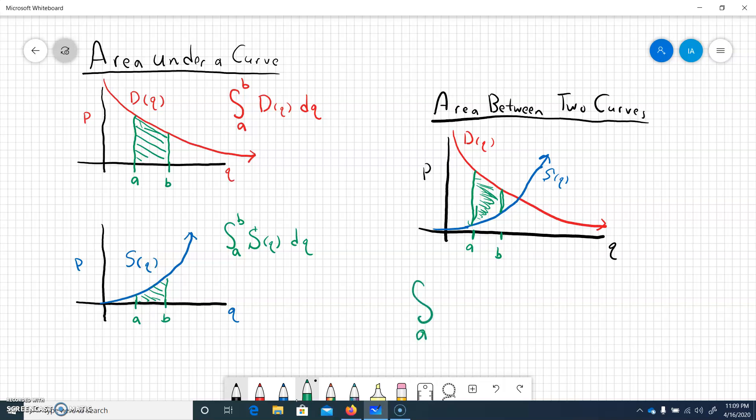So we still have our interval from A to B. Now we're going to take that and we're going to take the top curve, and the top curve here is the demand and that should be true. So demand curve minus the supply curve.